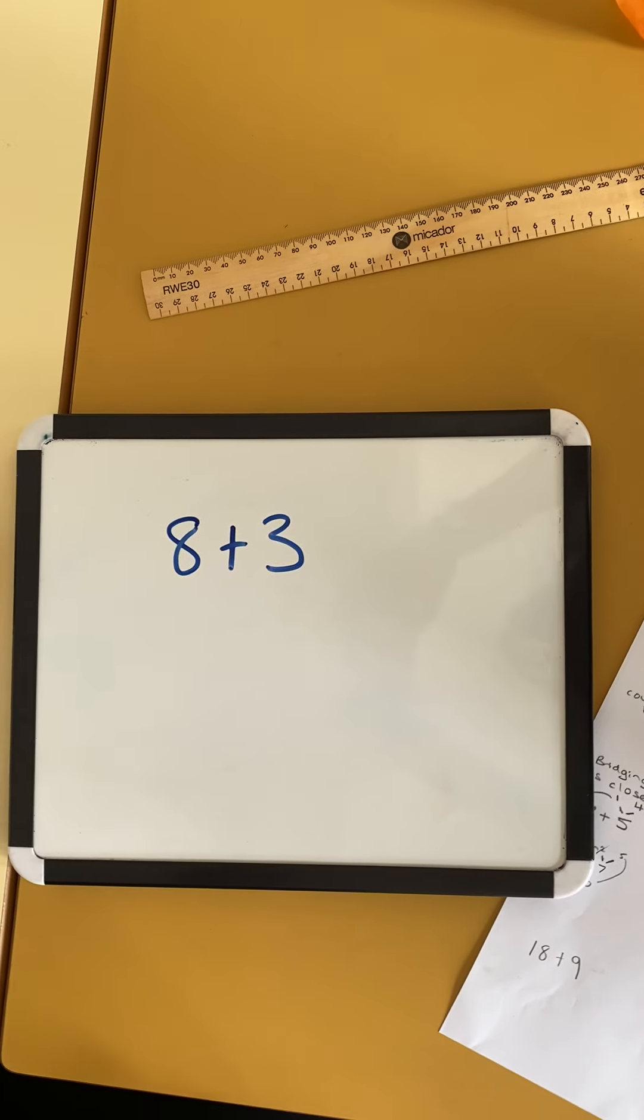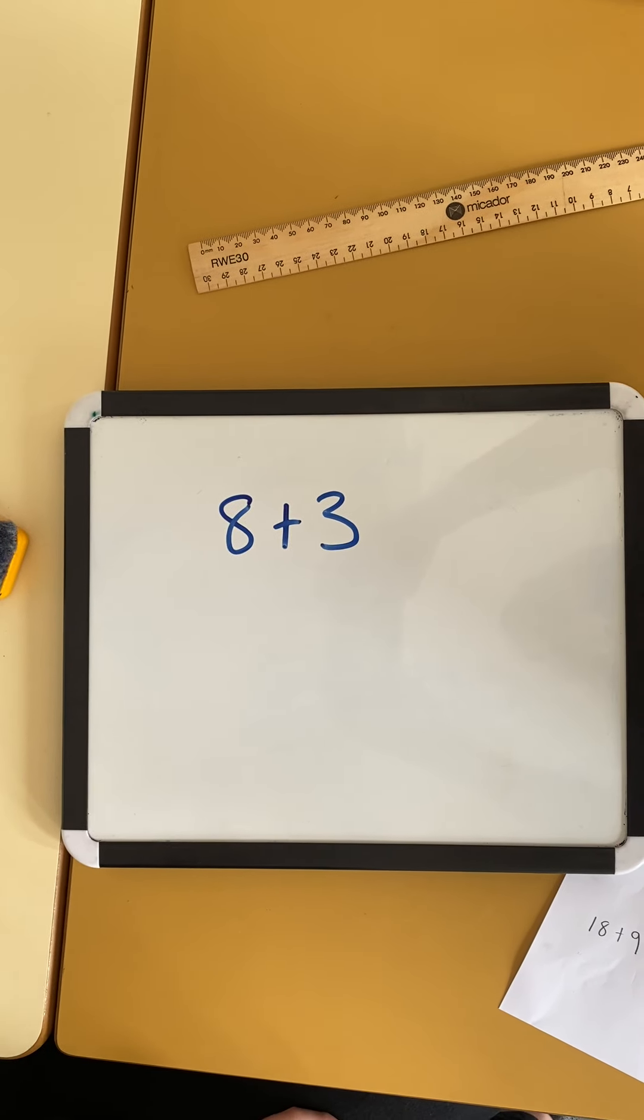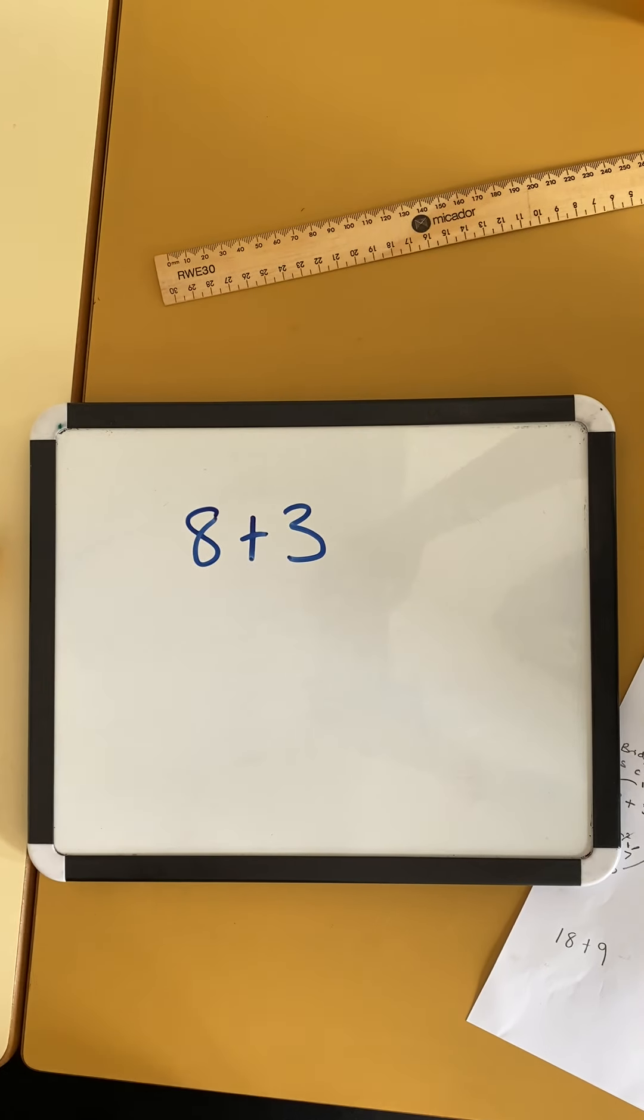Alright, here's our first example. We have 8 plus 3. Now for here I would use the counting on strategy because I'm only counting on a small number, I've only got 3.